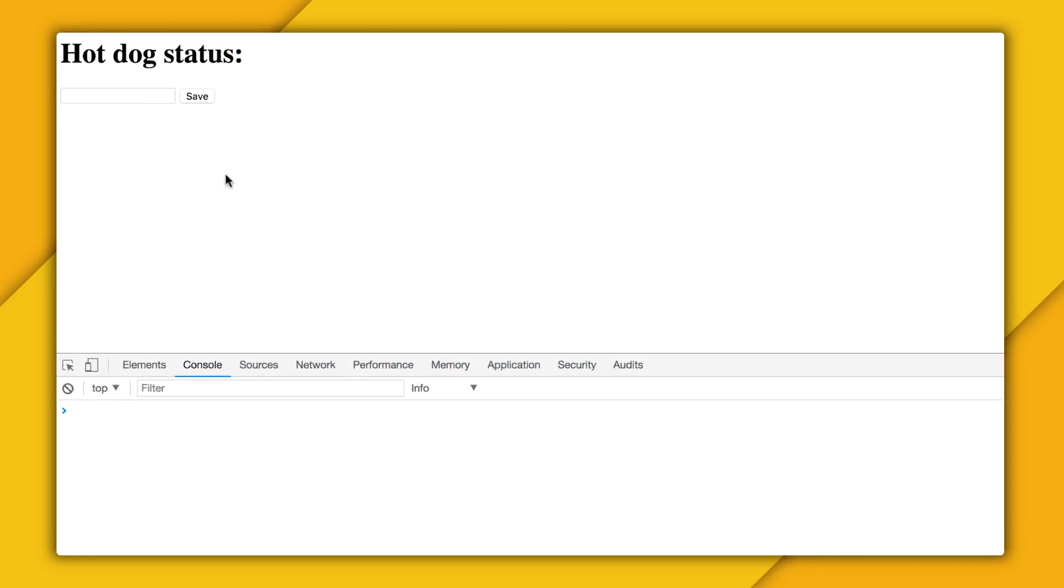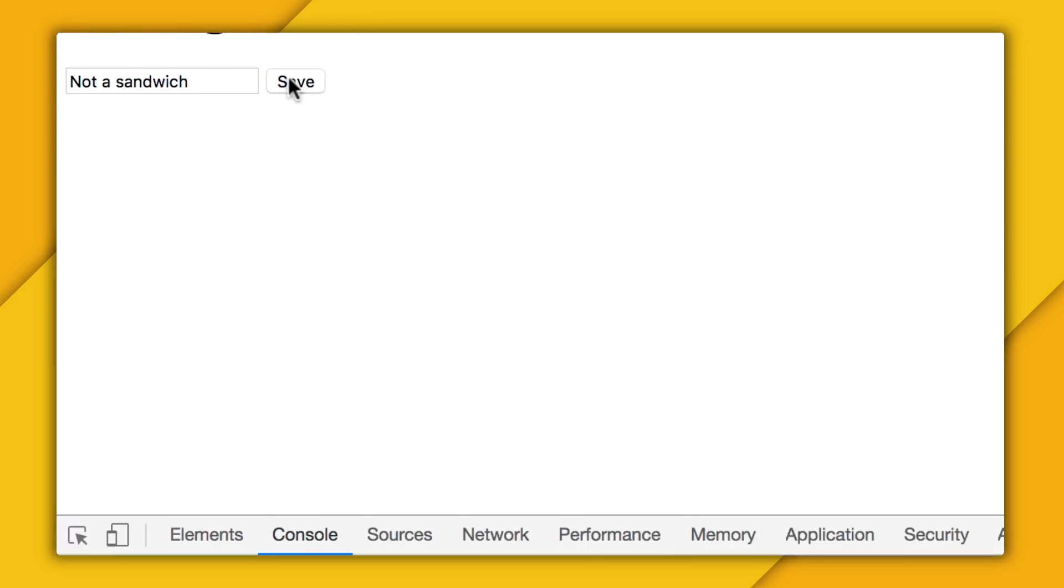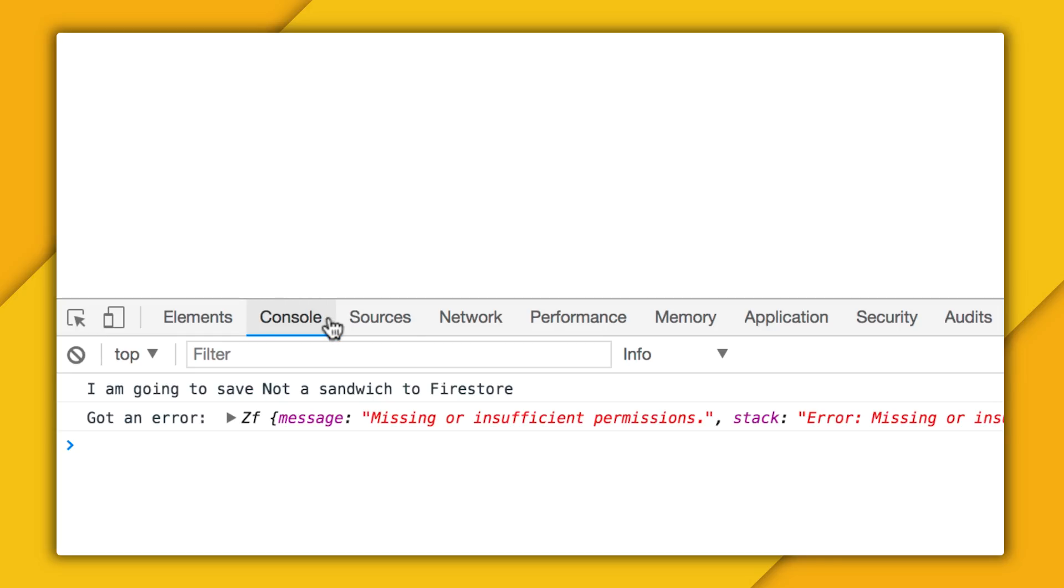So here, I'm going to enter not a sandwich as the current hotdog status, because it's not. I'll hit Save. And whoops, looks like I'm getting an authorization error.